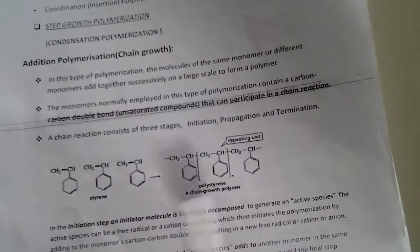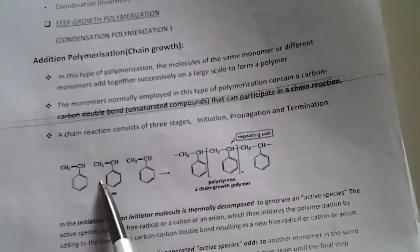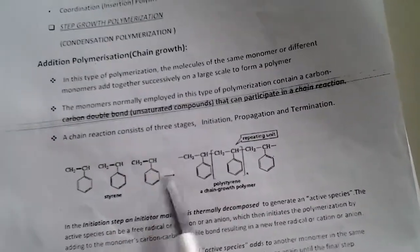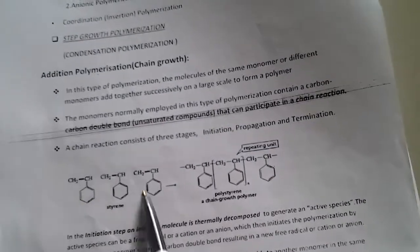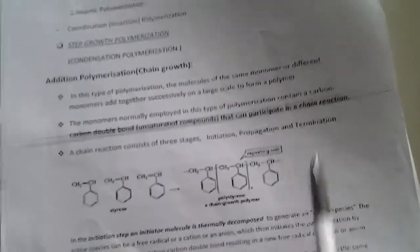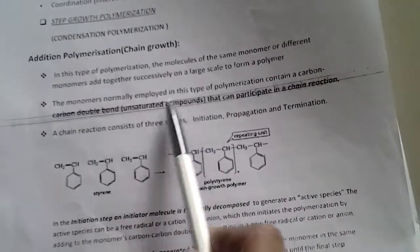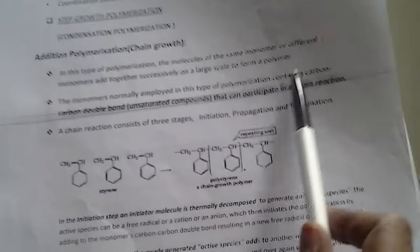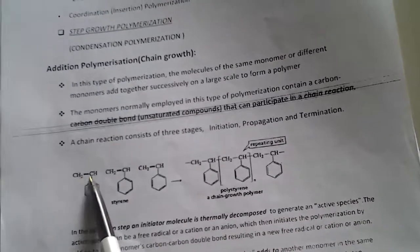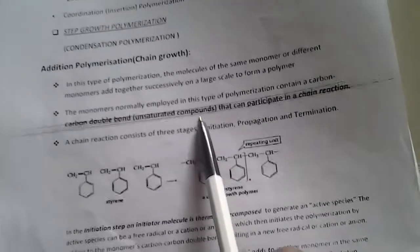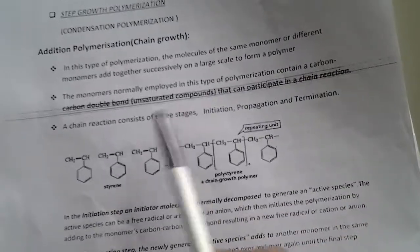For example, using the same monomer: styrene plus styrene plus styrene forms polystyrene. These are the same type of monomers added to form a polymer, called addition polymerization. The monomer normally employed in this type of polymerization contains a carbon-carbon double bond — that means unsaturation must be present — and participates in a chain reaction.